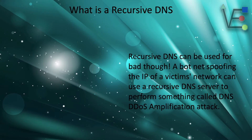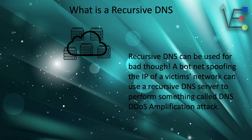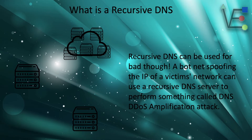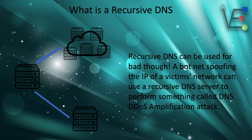A recursive DNS can be bad, though. In an attack called a DNS denial-of-service amplification attack, a botnet can spoof the IP address of its victim's network or computer and then send DNS requests to a recursive DNS server.